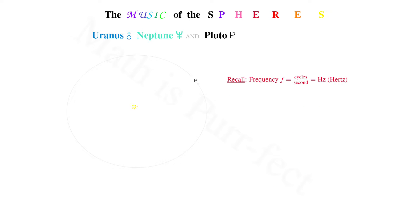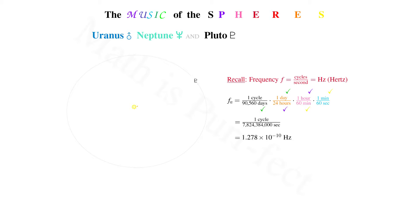And the final planet, slash planetesimal, in our solar system — save for those not yet recognized as such — is Pluto. His orbital period lasts 90,560 days. When we convert this into seconds, then reduce all of the unit factors, we are left with a frequency of one cycle every 7,824,384,000 seconds, or 1.278 times 10 to the minus tenth hertz.